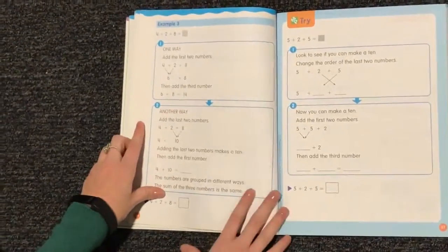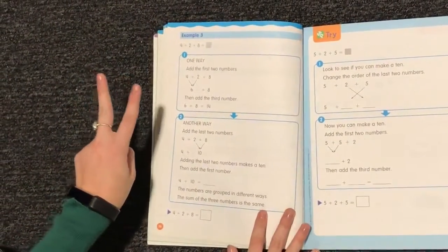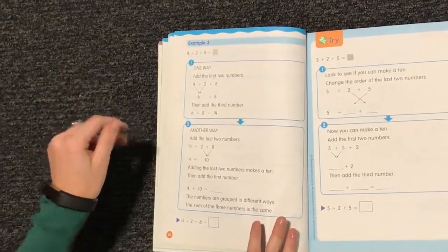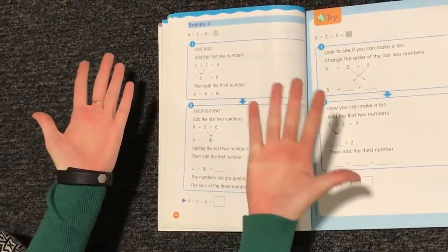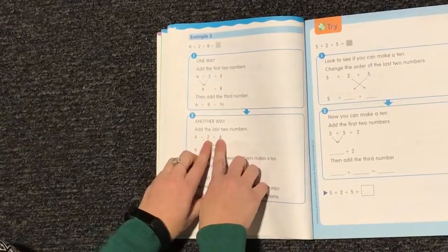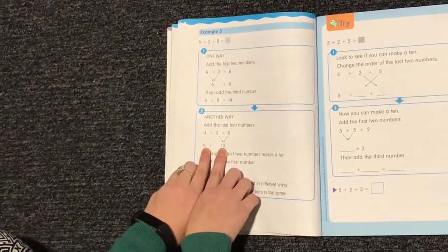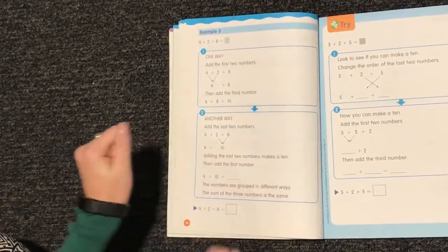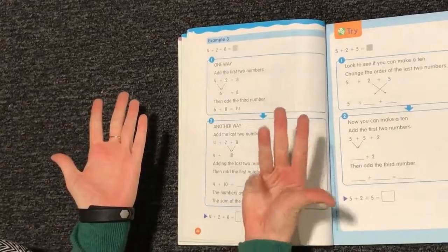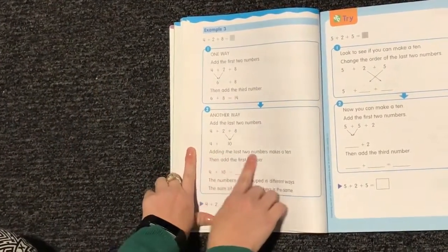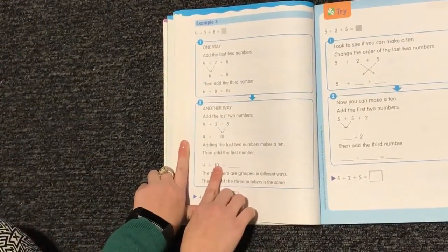Another way I could do it is to start with my 2 and my 8. So I'm going to add 2 and 8 more. 1, 2, 3, 4, 5, 6, 7, 8, 9, 10. I have 10 when I do 2 plus 8. Now I want to do the 4 that I still had plus 10. So if I do 4 and count on 10 more. 4, 5, 6, 7, 8, 9, 10, 11, 12, 13, 14. Adding the last 2 numbers makes a 10. Then I added the first number, the 4. So 4 plus 10 was 14.